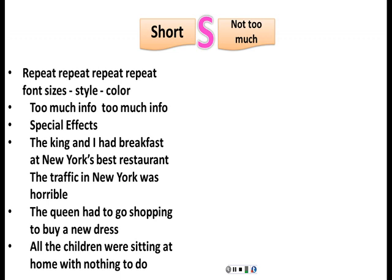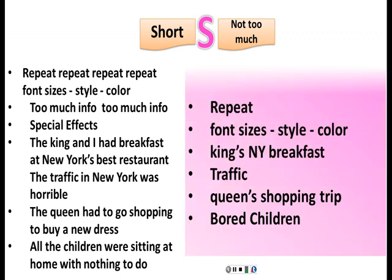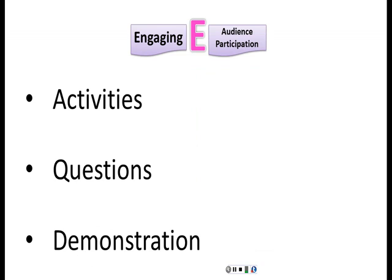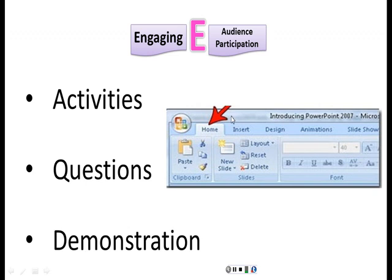Short — you don't want too much information. Your audience is here to listen to you talk and give them new ideas, not to read words off of the slide. Isn't this one much better? Now you need to get your audience up and active — this is the engaging part. Do an activity with them, ask them some questions, maybe even a demonstration. It can be as simple as putting a picture on the slide and asking your audience: what is this red arrow pointing to?